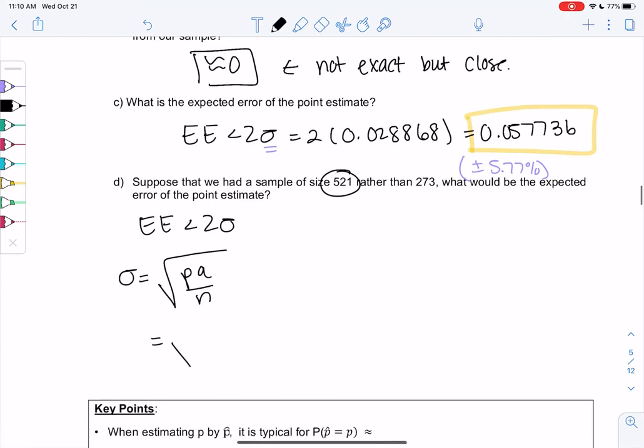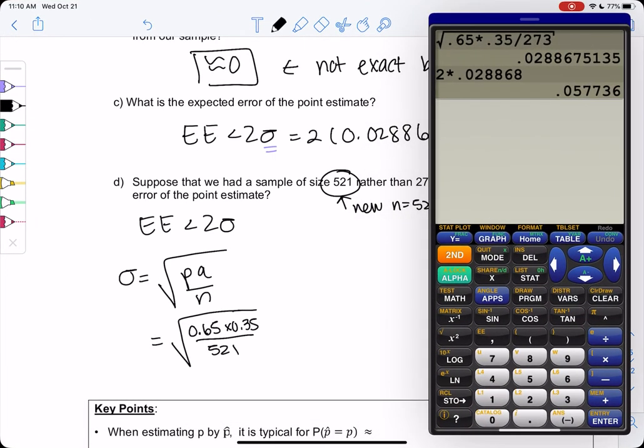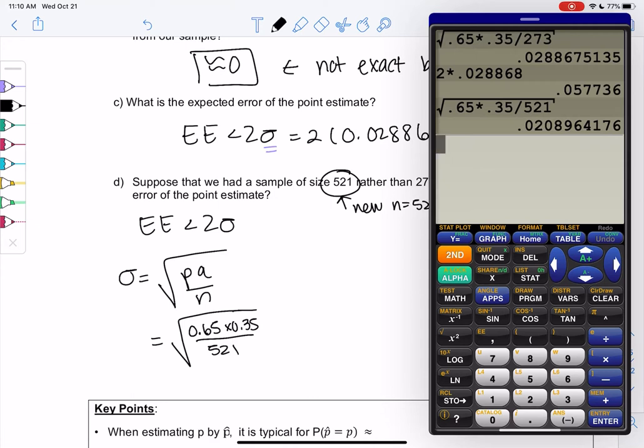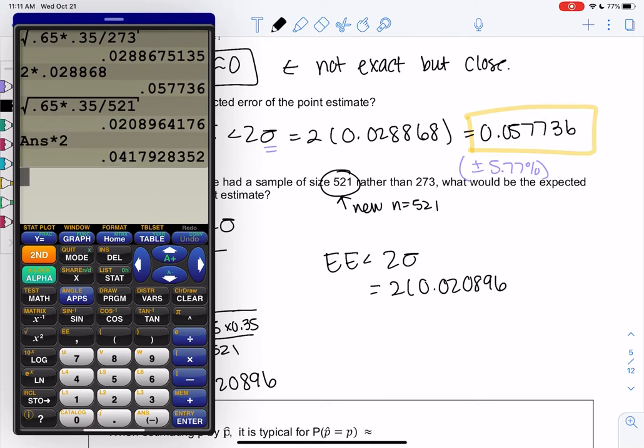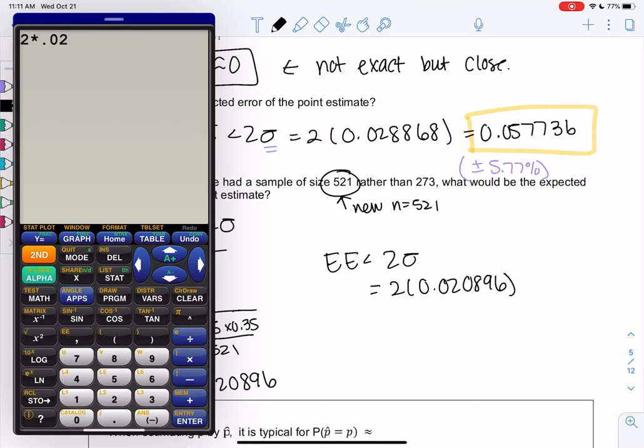So let's see what that does to the standard deviation. So square root of p times q, 0.65, times 0.35, and then we'll divide it by our new n of 521. So we'll do the square root of 0.65 times 0.35, divided by 521. And we get a smaller standard deviation of 0.020896. And so then our expected error is within two of these. So 2 times 0.020896. So about 0.041792.